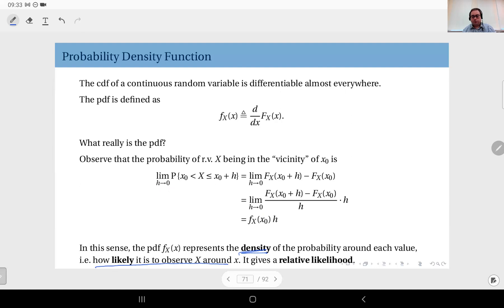So this in a sense gives you a relative likelihood. So the PDF function signifies how likely you are to observe random variable X at certain points. The larger the PDF value, the more likely that you will observe the random variable at that region.